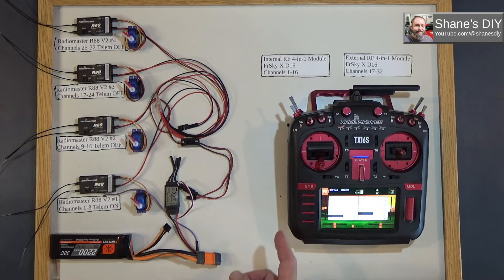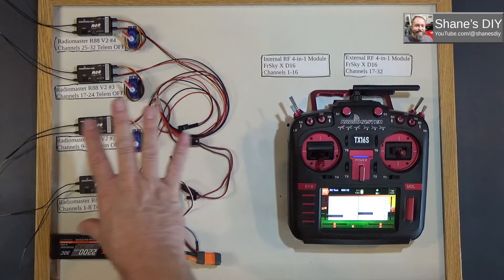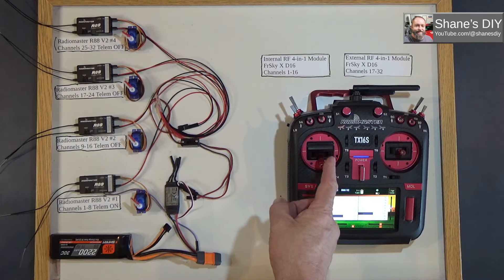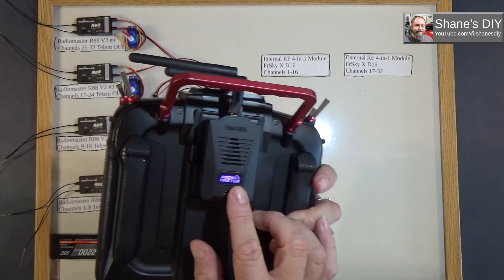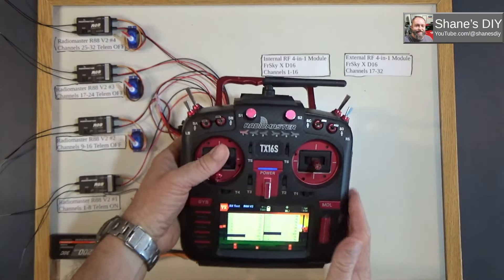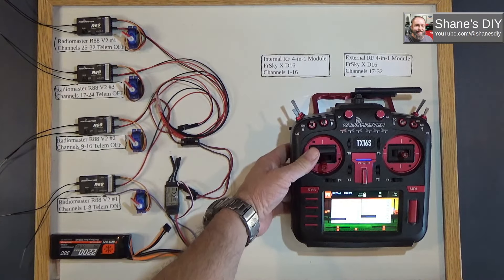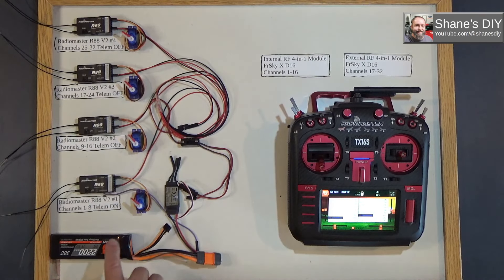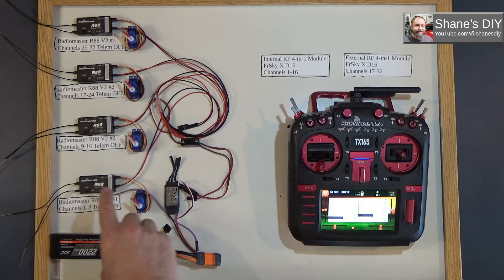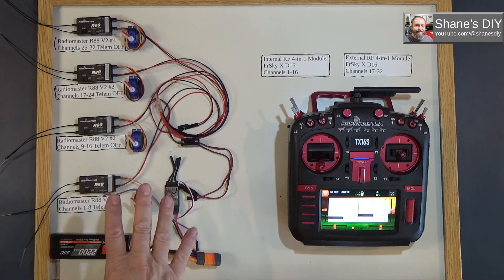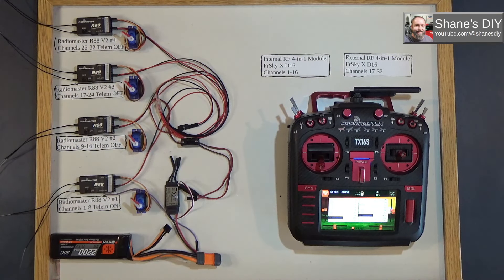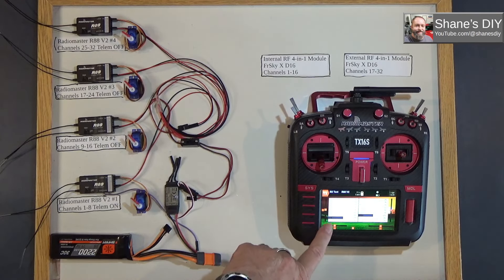I've heard this could be done, and just out of my own curiosity, I got all the parts set up on the back of my radio. I do have a 4-in-1 external module, and then my internal module is also 4-in-1. I've set this all up with a battery, a little ESC, and four different receivers to show you how you would configure this to get access to all 32 channels that are on this radio.